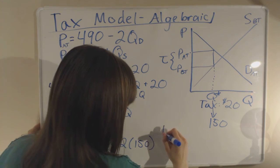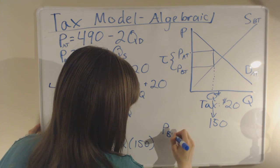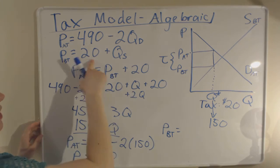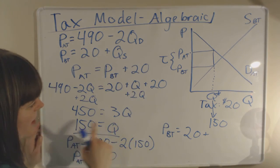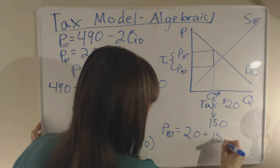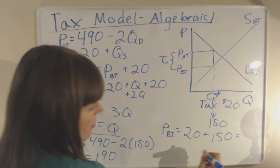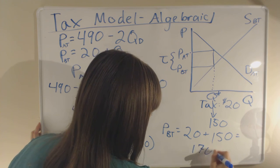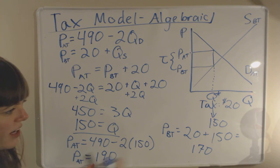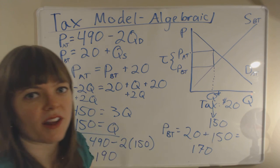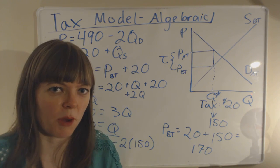And our price before-tax, we can solve for that the same way by plugging in. It's 20 plus Qs. Qs is 150, so that's going to equal 170. So we see actually that naturally the difference between our after-tax price and our before-tax price is exactly equal to our tax 20, and we've solved the problem.